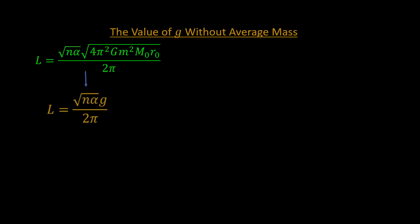If you choose not to use an average mass for all planets, but rather their independent masses, then we can factor out m squared from the square root, so that the momentum equation will become m times the square root of n alpha times G prime over 2 pi.